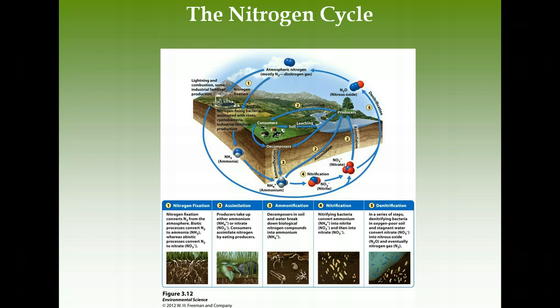Nitrate is used by producers and is of great importance. Because nitrate doesn't bind easily to soil particles, it's carried along in water — a process called leaching. Leached nitrates settle in the bottom of oceans or lakes, where denitrifying bacteria convert nitrate through a series of steps into nitrous oxide and finally dinitrogen gas (N₂), which is emitted back into the atmosphere. That whole process is called denitrification.